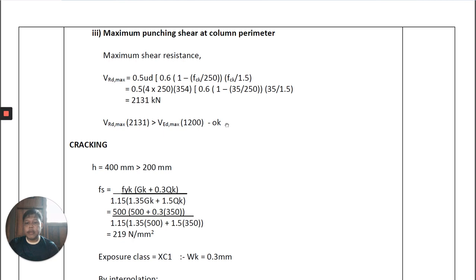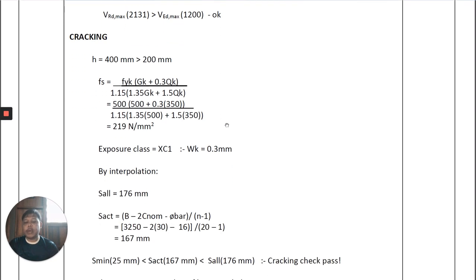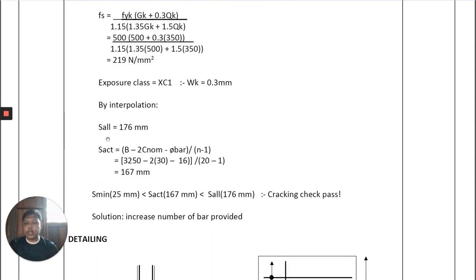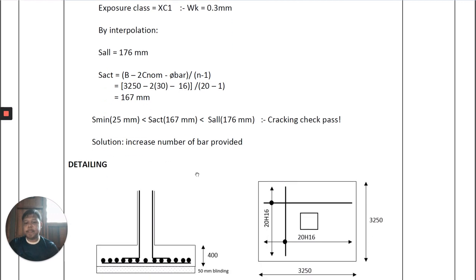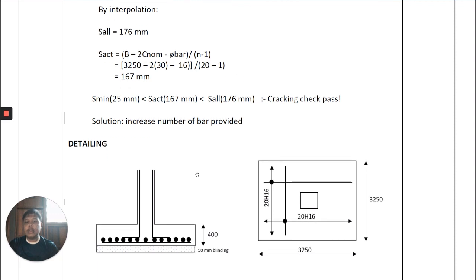The crack check is performed the same way as in beam design. We calculate the steel stress, then check the exposure class to determine whether w_k = 0.3 or 0.4 mm applies. By interpolation, the allowable maximum bar spacing is 176 mm. The actual spacing = (b − 2 × C_nominal − diameter bar) / (n − 1) = 167 mm. Since 167 mm < 176 mm, the crack check is passed. If the crack check fails, increase the number of bars to reduce the spacing.